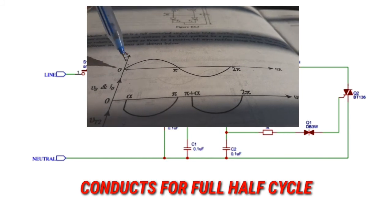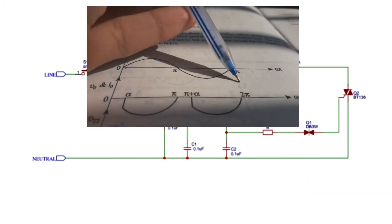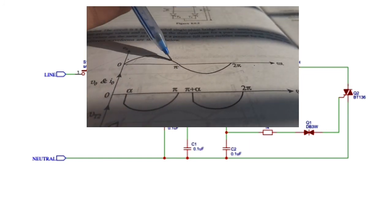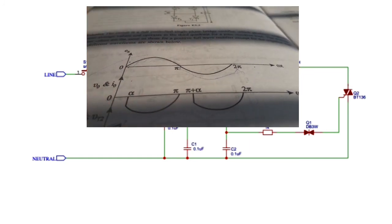So in this way we can control the phase angle and thus the speed of the motor. The conduction angle period is 0 to 180 degrees.